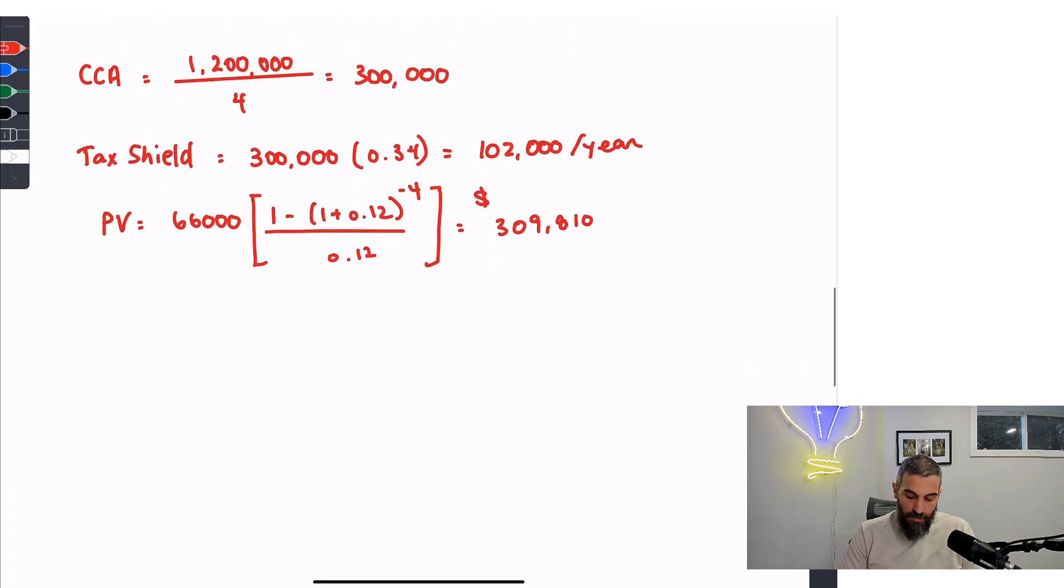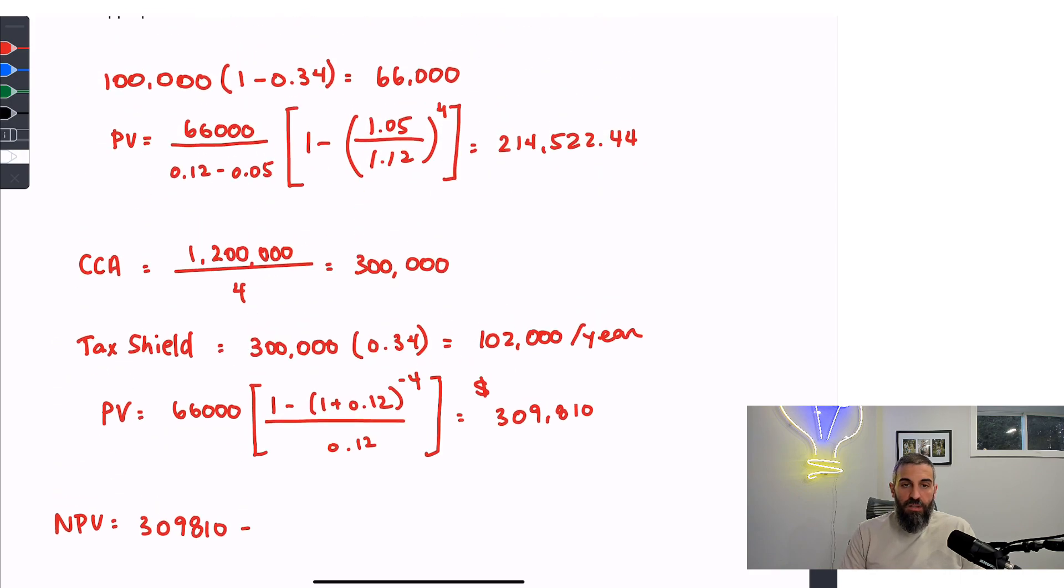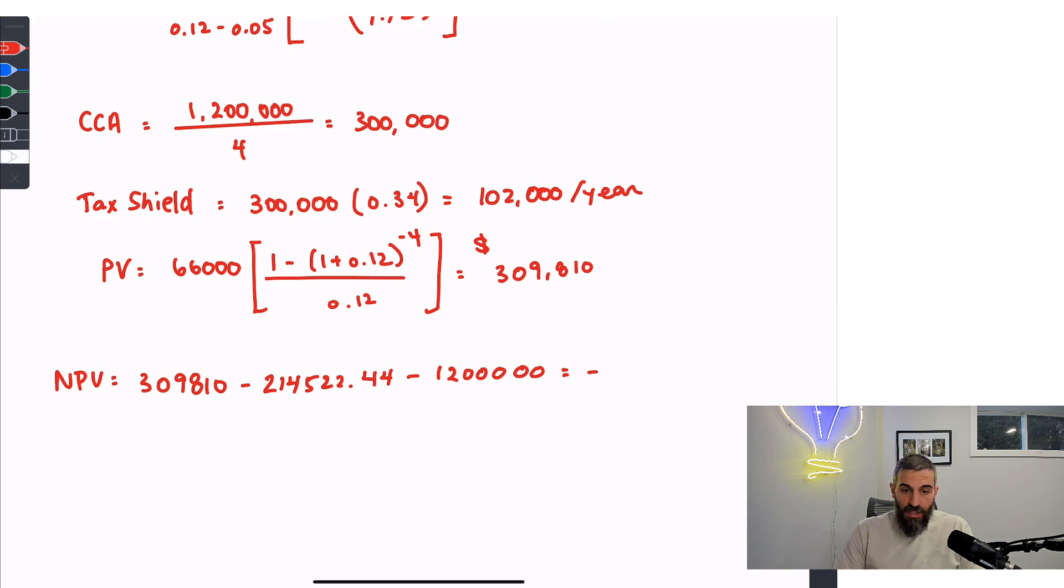So the net present value is $309,810. We consider this to be an inflow. Tax shields or tax savings are considered inflows of cash. The rest in this case is an outflow because the $214,000 is the present value of the operating costs. So our cost is an outflow. We'll subtract $214,522.44. And we're also going to subtract the $1.2 million that we spent to purchase the machine. So the net present value here is negative $1,104,712.44.